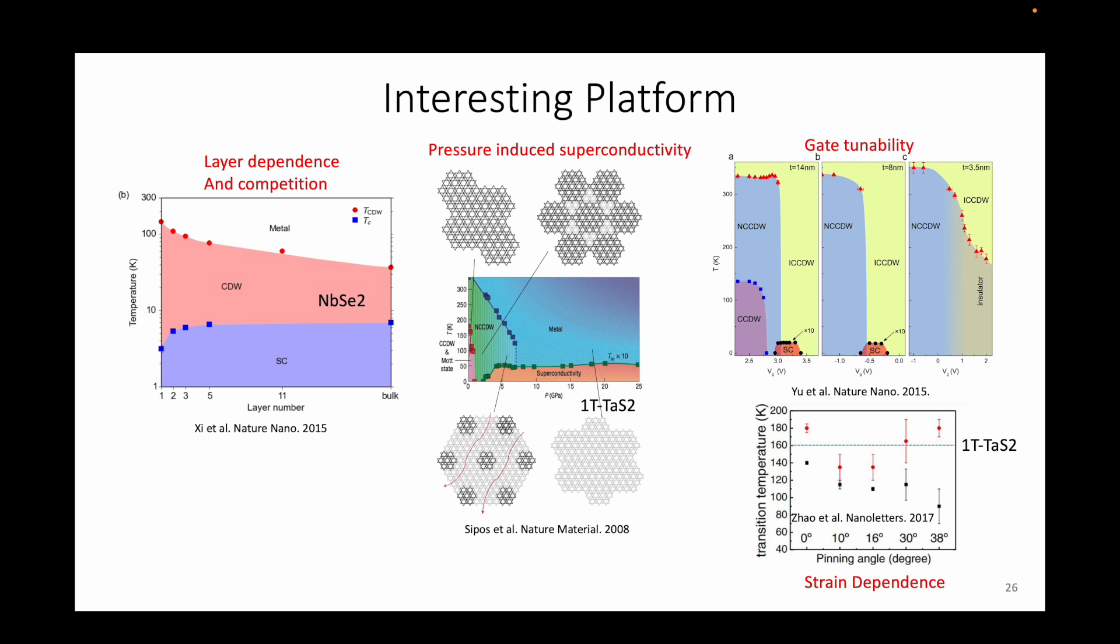2D materials, in general, are quite responsive to out-of-plane pressure thanks to their van der Waals nature. In tantalum disulfide, this pressure seems to kill charge density wave ordering, enhance metallicity, and induce the emergence of superconductivity.